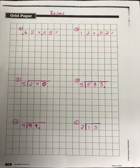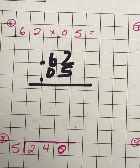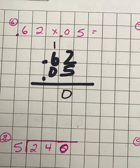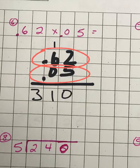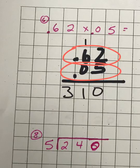For this page, do either each question by itself and then check the answers in the video, or get them all done and then check the video after. So 0.62 times 0.05 — multiply like normal. Count the number of digits to the right of the decimal. In the top and bottom combined there are four numbers to the right of the decimal, so there's not enough digits in the answer. I need to add a zero so I get enough. My answer is 0.0310.